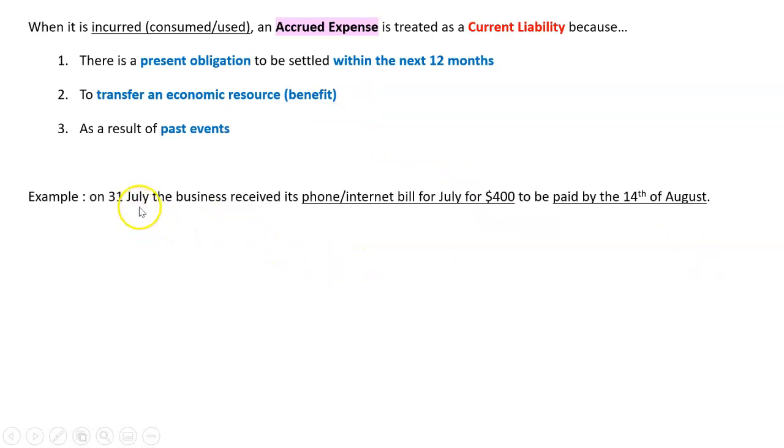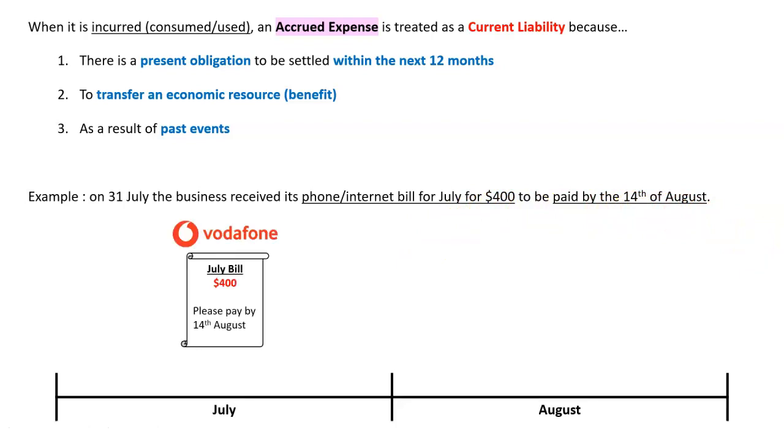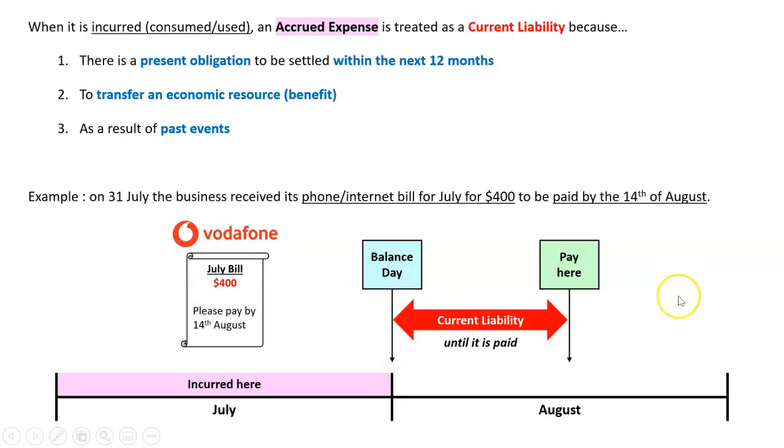So let's take an example. On the 31st of July, the business received its phone or internet bill for July. That was $400, and the phone company says you have until the 14th of August to pay it. That's pretty common how most phone bills work. So here's what we got. We used all our phone and internet during July, but we don't get the bill until the end from Vodafone, and it says please pay it by the 14th. So it's incurred in July and it will be paid for here. There's a delay between incurring it and paying it. That is a liability, because at balance day here, which is at the end of the month in this case, we have something that we have incurred but not yet paid for.